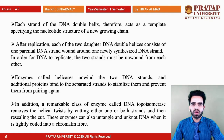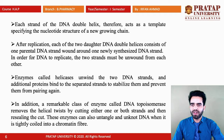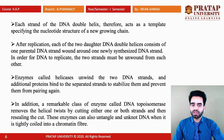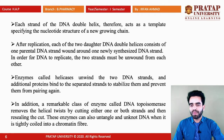After replication, each of the two daughter DNA double helices contains one parental strand and one newly synthesized DNA strand. In order to replicate, the two DNA strands must be unwound or unzipped from each other. Enzymes called helicases unwind the DNA strands, and then other proteins bind to the separate strands to stabilize them and prevent them from re-pairing.